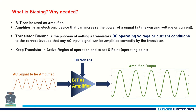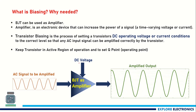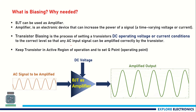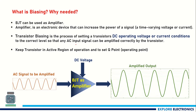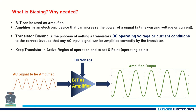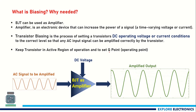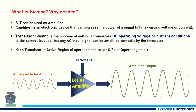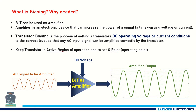Transistor biasing is the process of setting the transistor's DC operating voltage or current conditions to the correct level so that the AC signal can be amplified. We need to bias the BJT to operate at a Q point, which we get when the transistor is operating in the active region.